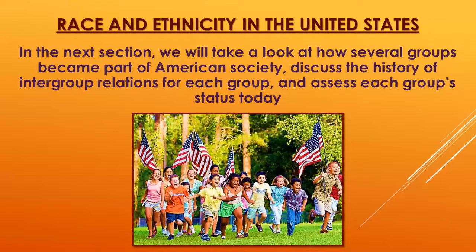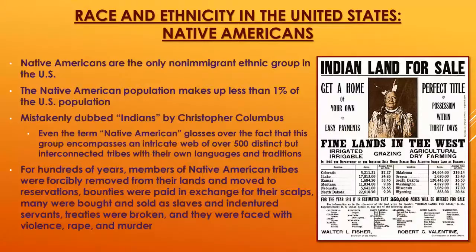Now a socio-historical look at different racial and ethnic groups in the U.S. Native Americans are the only non-immigrant ethnic group — they were here before the colonists arrived. Today they make up less than one percent of the U.S. population. They are sometimes still called 'Indians,' a misnomer from Christopher Columbus mistakenly thinking he had landed in India. Even 'Native American' glosses over the fact that there were over 500 different tribes when colonists arrived.